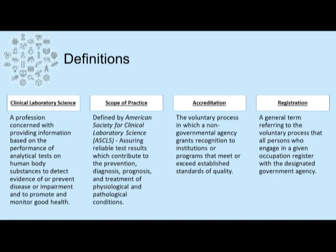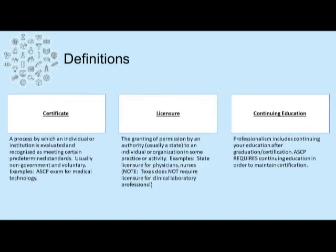Accreditation is a voluntary process in which a non-governmental agency grants recognition to institutions or programs that meet or exceed established standards of quality. Registration is a general term referring to the voluntary process by which all persons who engage in a given occupation register with the designated government agency. Certification is a process by which an individual or institution is evaluated and recognized as meeting certain predetermined standards — usually by a non-government agency and is a voluntary process. Examples include the ASCP exam for medical technology. Licensure is the granting of permission by an authority, usually a state, to an individual or organization for some practice or activity — examples include state licensure for physicians and nurses. It should be noted that Texas does not require licensure for clinical laboratory professionals.